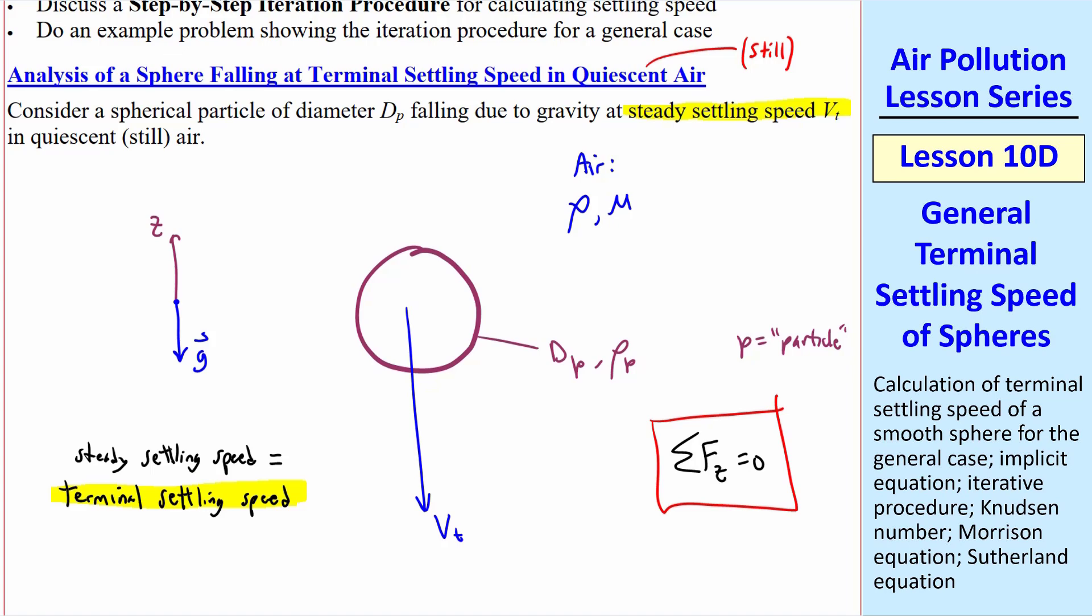Let's look at all the forces on this sphere. There's a gravitational force, which equals the weight of the body. There's an aerodynamic drag force. And there's a buoyancy force, which is due to the displaced air as discussed in a previous lesson.